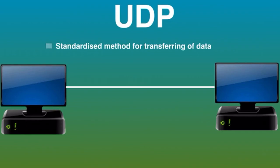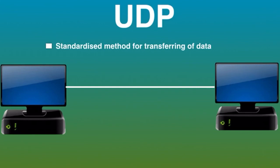Let's talk about how UDP works. UDP is a standardized method for transferring data between two computers in a network. Compared to other protocols, UDP does this in a simple fashion. UDP sends packets directly to a target computer without establishing a connection first, and does not check whether they arrive or not. UDP does not guarantee data delivery. UDP packets are referred to as datagrams.